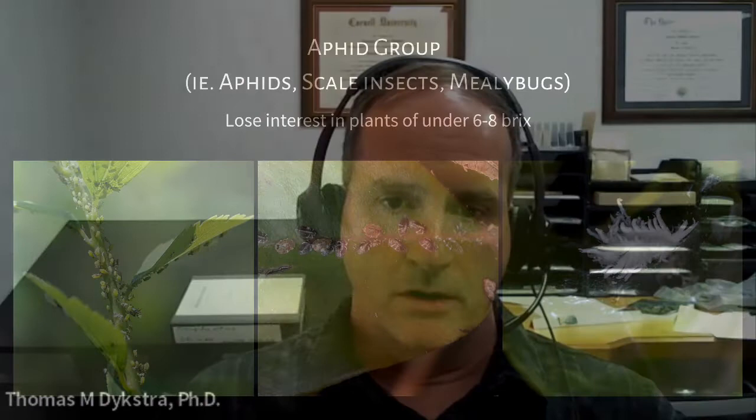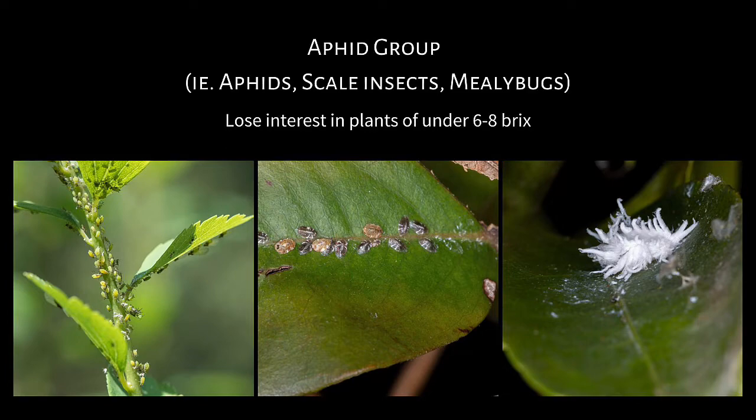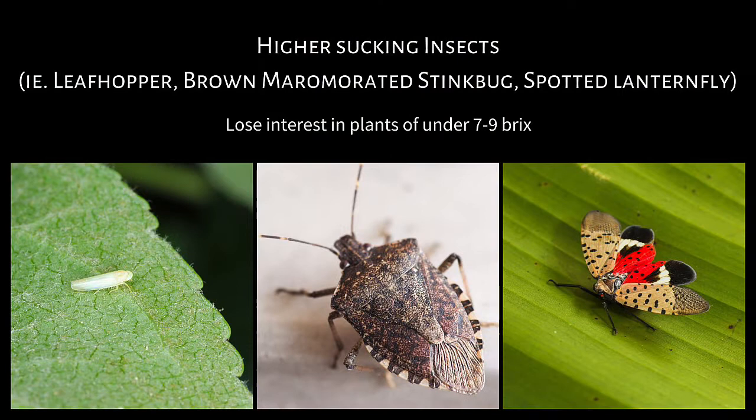The main one usually referred to as among the lowest level of insect digestion is the aphid group. They only have the ability to suck certain fluids, usually from the phloem tissue or the xylem tissue of the plant. Moving up to higher sucking insects — the leafhoppers, the stink bugs, the lanternfly going on up in the northern part of our country — those type of sucking insects would be of a slightly higher category, and you will find them attacking higher quality plants.